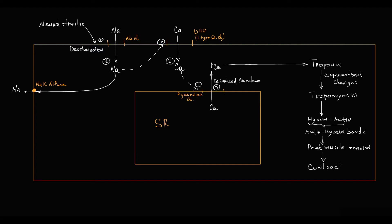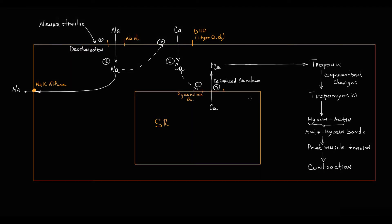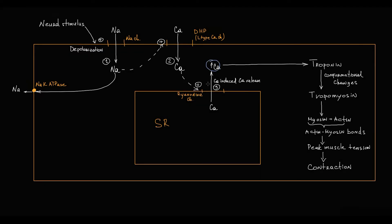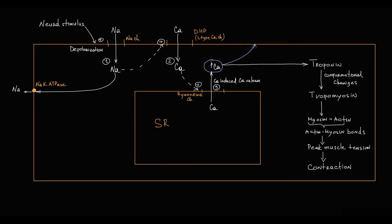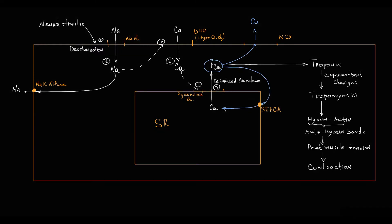But after contraction, relaxation must occur. To relax, cardiomyocytes have to decrease the calcium level in the cytoplasm. This decrease in calcium occurs by two mechanisms: by the sodium-calcium exchanger that exports calcium out of the cell, and by SERCA protein that pumps calcium into the endoplasmic reticulum. In normal conditions, the SERCA pathway is the major mechanism that decreases calcium concentration in the cytosol.